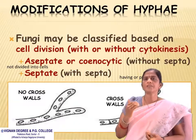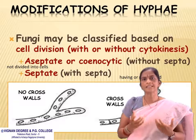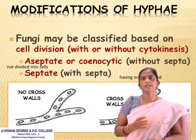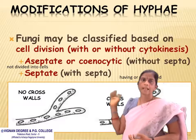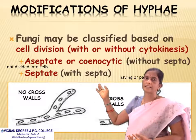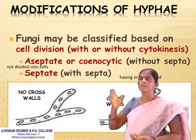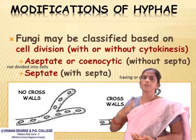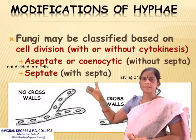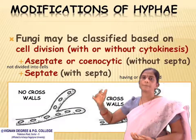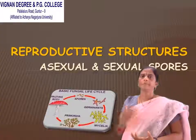Modification of hyphae — fungi may be classified based on cell division as aseptate or septate. Aseptate, also called coenocytic, means without septa — no division of the cell. Septate means with septa — there is a partition dividing the cell into compartments.